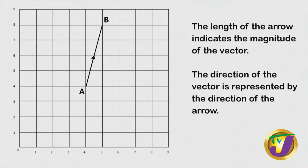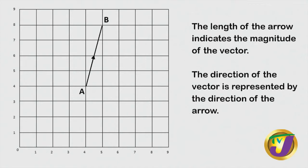The length of the arrow indicates the magnitude of the vector — magnitude refers to the length of the representation. The direction of the vector is represented by the direction of the arrow. I could not call it vector BA because the arrow shows movement from A to B, not B to A. Direction is very important.